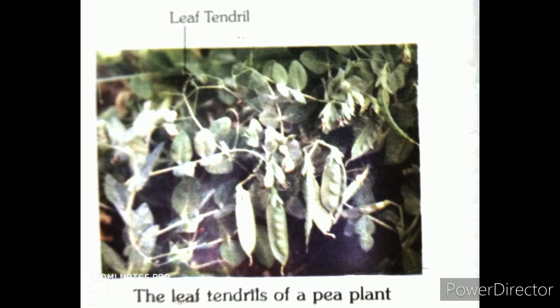The leaves also get modified into thread-like tendrils. These tendrils coil around any support and help the plant to climb.